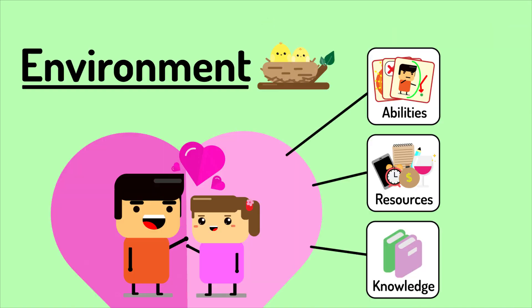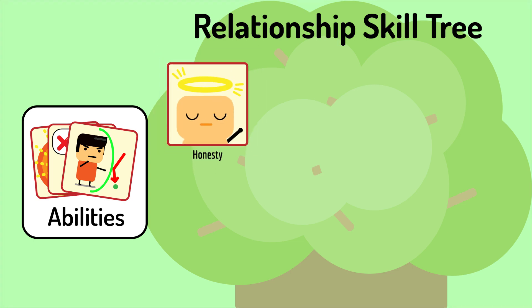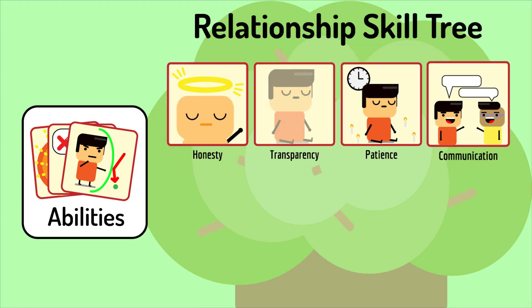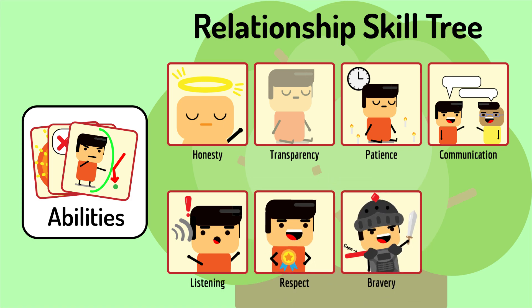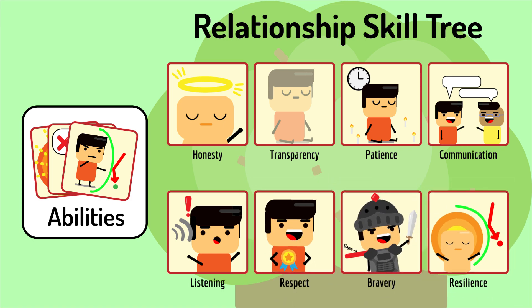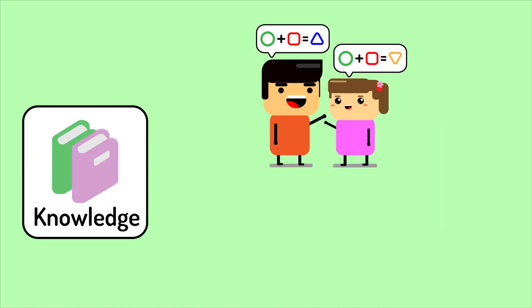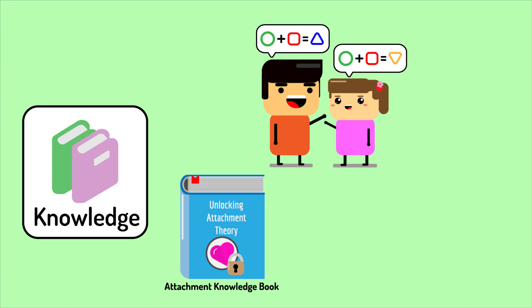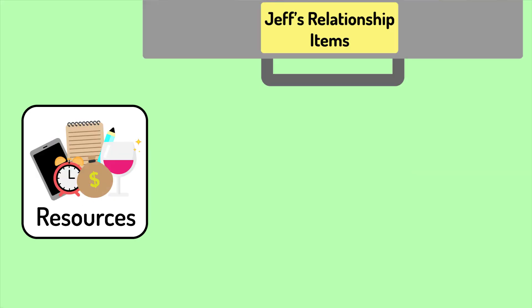Skills and abilities include honesty, transparency, patience, communication, listening, respect, bravery, resilience to criticism, and open-mindedness, to name a few. Knowledge includes understanding one another's thought patterns, their attachment styles and how to work around them, and knowledge of where to get relationship answers.